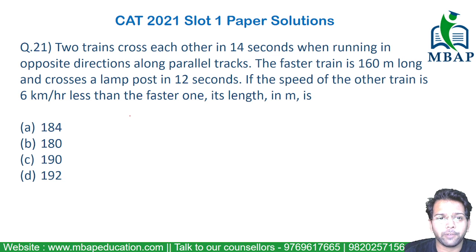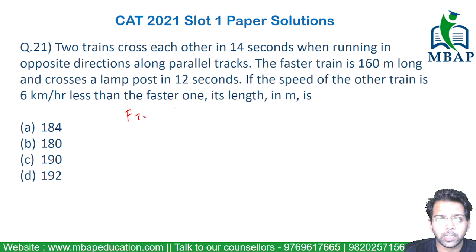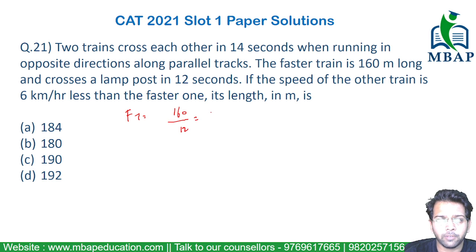Let's start with finding the speed of the faster train. It is able to cover 160 meters of its own length in 12 seconds, which will basically be 160 divided by 12, which equals 40 upon 3 meters per second.